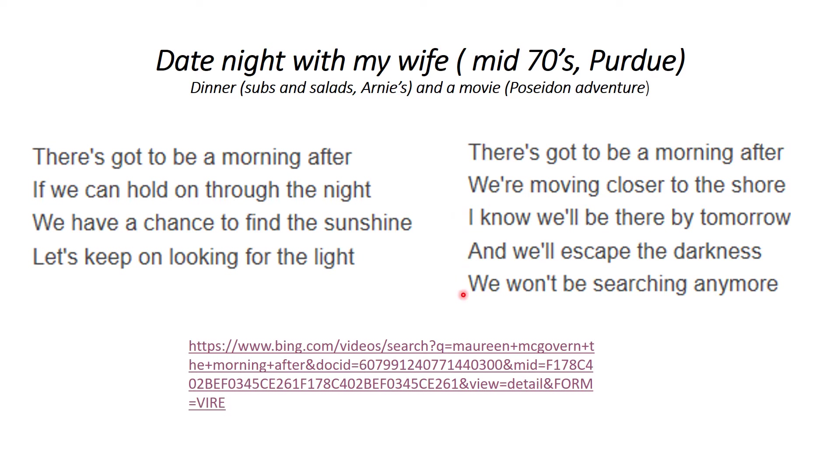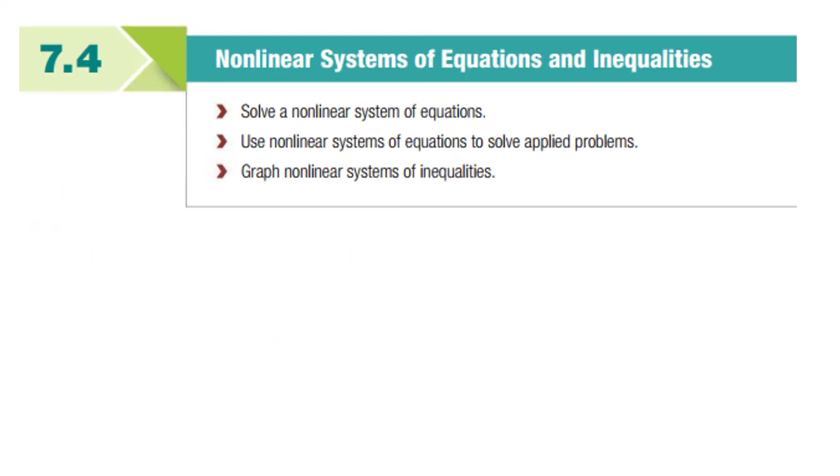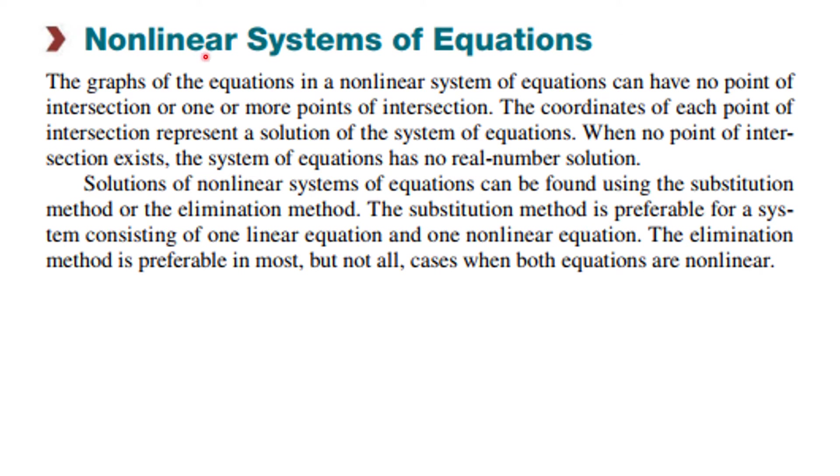Section 7.4 - here are the learning objectives. Please make note of them. To solve a nonlinear system of equations, realize they could have no point of intersection, one or more points of intersection. The coordinates of each intersection represent a solution and must work in all equations. We're searching for real number solutions. We'll look at an example with complex solutions, but we cannot graph those, so we'll declare them nonreal solutions. We can find solutions using substitution or elimination methods.